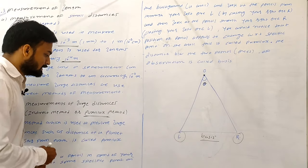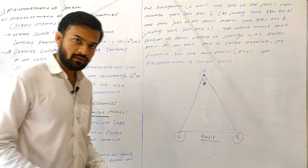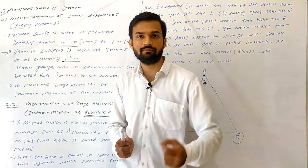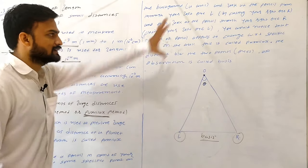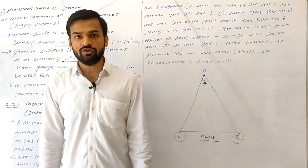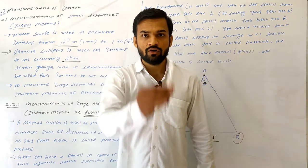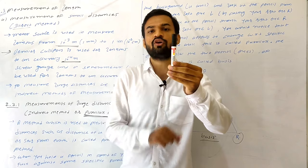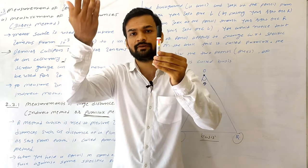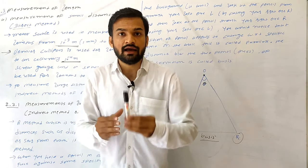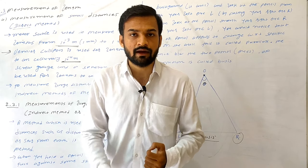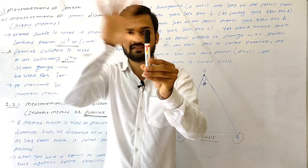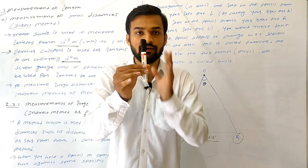The parallax method is used to measure large distances such as the distance of a star or planet from Earth. To understand the word 'parallax,' let's do an experiment you can try at home. Step one: hold a pencil in front of your face and observe it with respect to a specific point on a background wall.